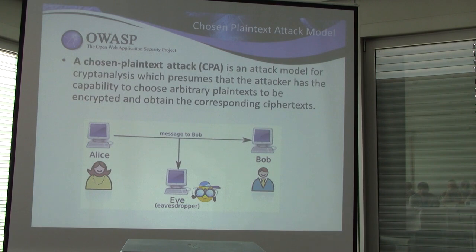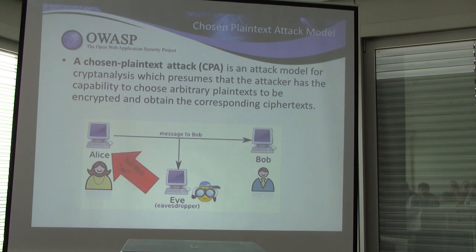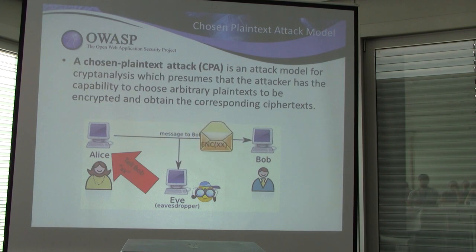What is a chosen plaintext attack? The attacker has the ability to choose arbitrary plaintext to be encrypted and obtain the corresponding ciphertext. Eve can tell Alice what to send to Bob, and then Eve, also acting as an eavesdropper, gets to see the encrypted message traveling over the wire.